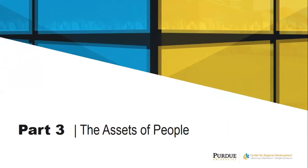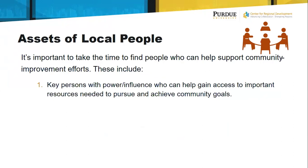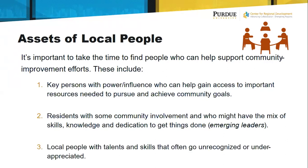Let me first talk about people — the assets of individuals. It's important to take the time to find people who can help support your community improvement efforts. These include three different kinds of people. One: people who have influence and power — who are the leaders in key positions that have access to the kinds of resources needed to pursue and achieve important community goals? Second: those individuals who have been involved in a community, are building knowledge and skills, and are the emerging leaders — people who have the seeds of leadership but with a little more nurturing could become the leadership of the future. Third: those people who have talents and skills but often go unrecognized, underappreciated, or untapped — people in our community who are simply never asked to step up and help make a difference.